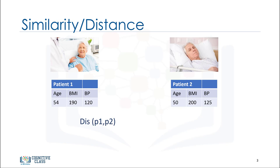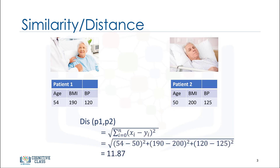Our data points are patients with a feature set of three dimensions, for example, age, body mass index or BMI, and blood pressure. We can use different distance measurements to calculate the proximity matrix, for instance, Euclidean distance.